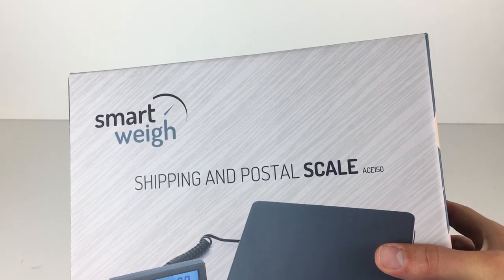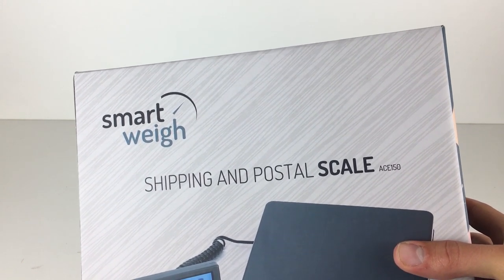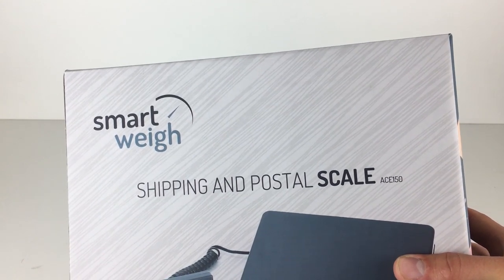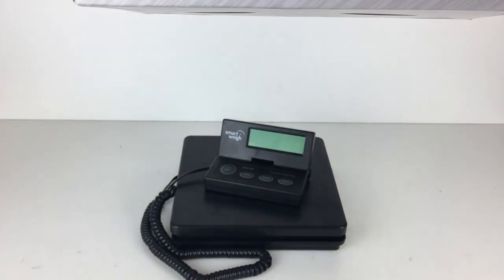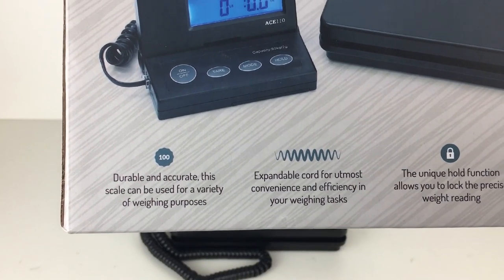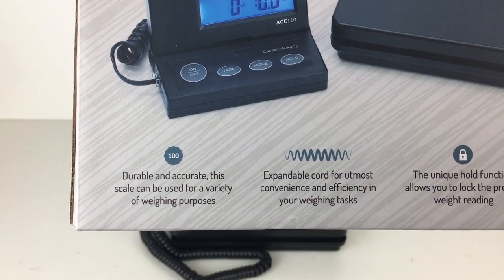So we've got the box here and apologies it doesn't fit completely on camera. Hopefully I may get a better setup for these reviews in future, but it's these Smart Weigh shipping and postal scales. You can see there's a graphic of it on the box there, but we don't really need the graphic because obviously it is just there. It's got a few different things, three different kind of advertising points.